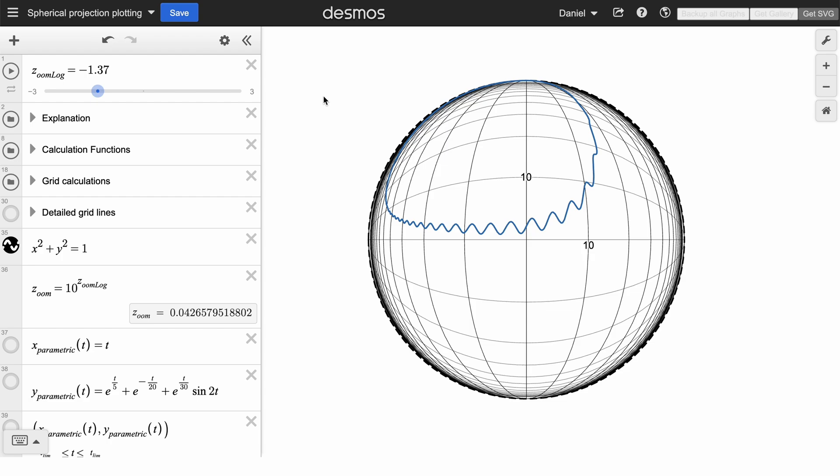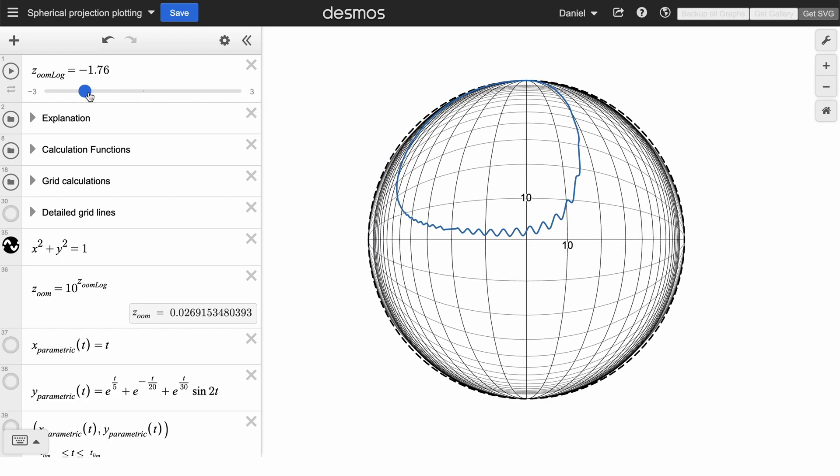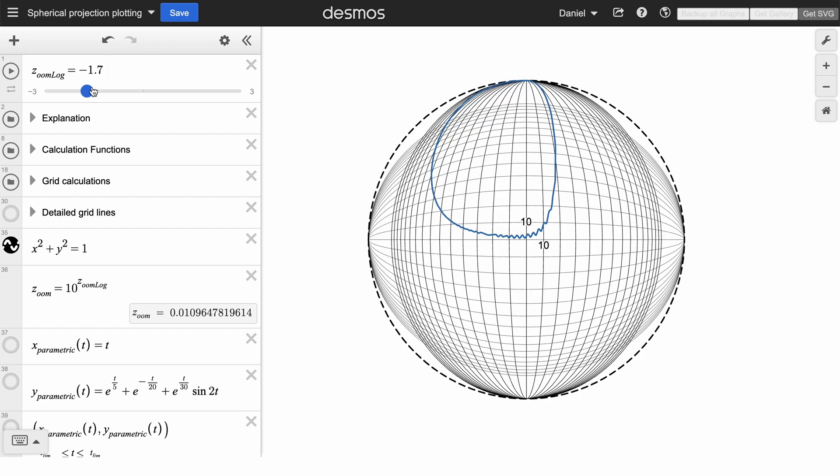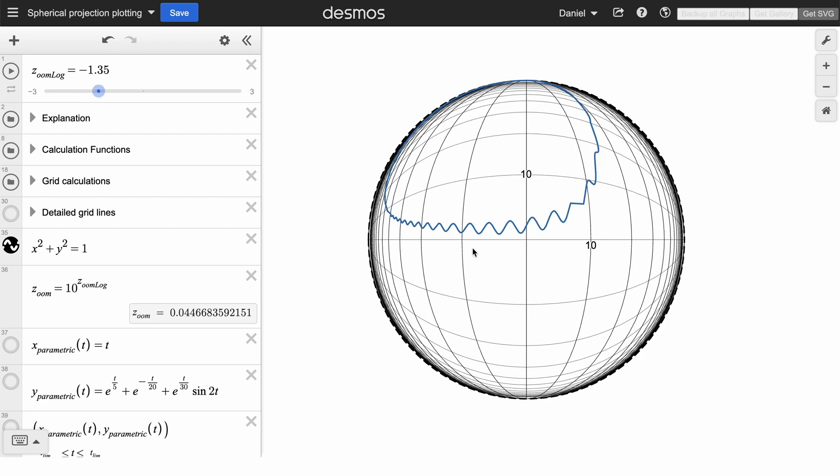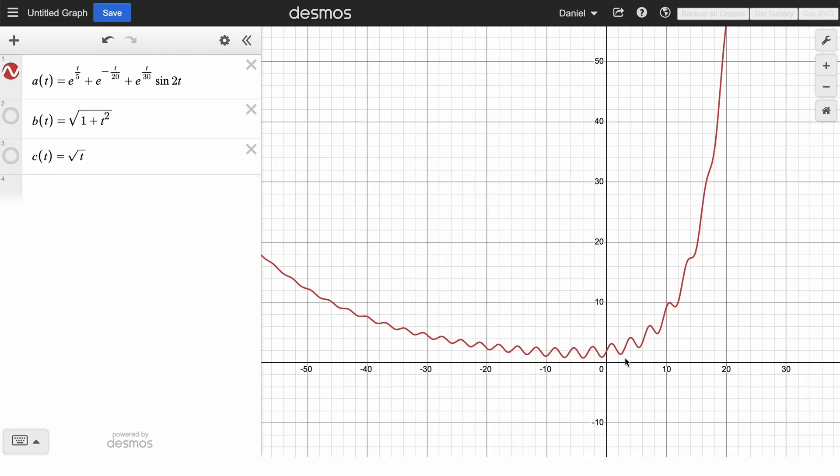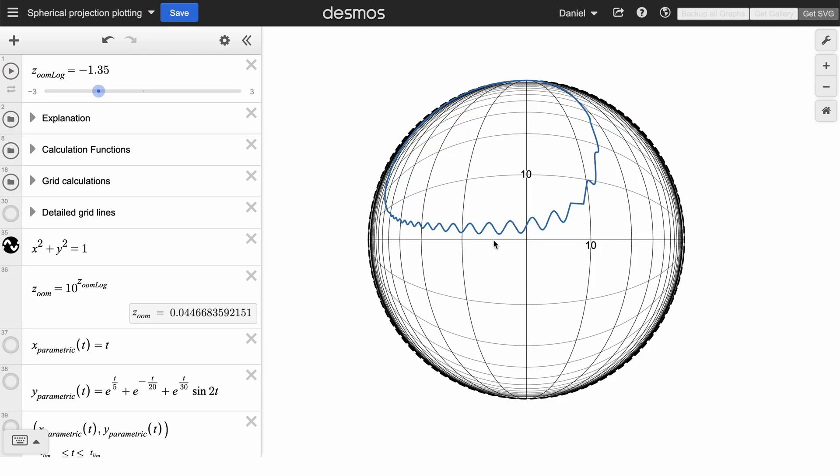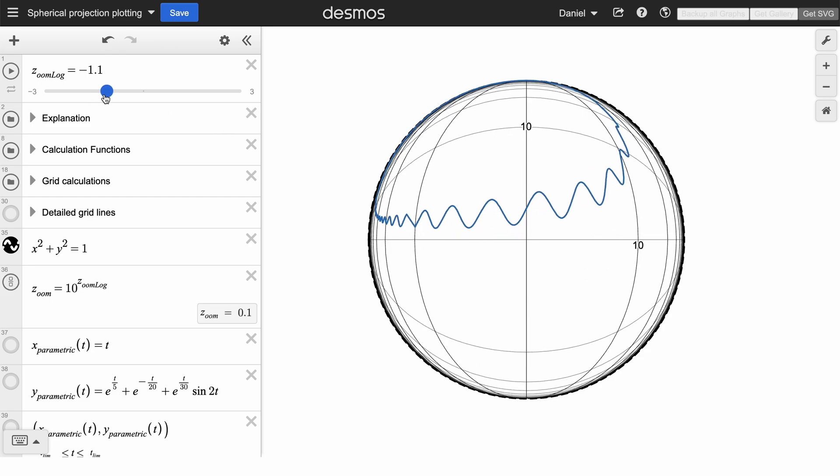In this video, I want to talk about a way to see all of a function at once, where every single point in the xy plane is projected onto this one circle. You can see that this distorted blue line over here is roughly the same function as I have graphed here on the xy plane, but over here on the circle, the ends of the graphs keep going and they approach the edge of the circle.